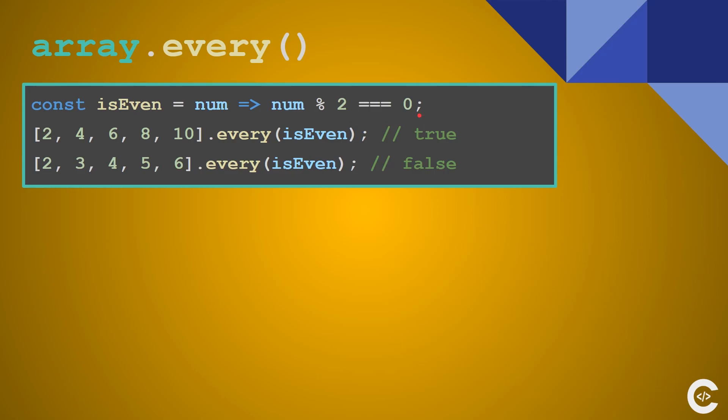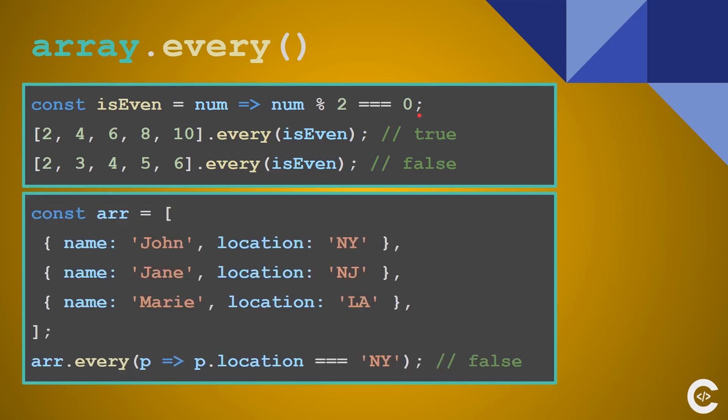And you see what the isEven callback does. The second example is that we have an array of objects and we want to check whether every person in the array has location New York. And as you can see this evaluates to false because there are persons which don't have location New York.